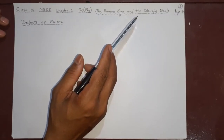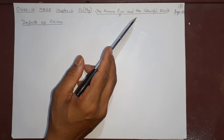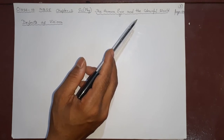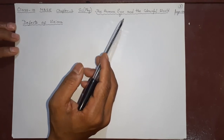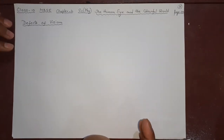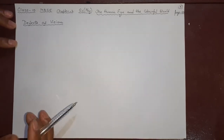We have already finished in our previous lecture what is the human eye, its diagram, and how the different parts of the eye enable us to see things. We also did power of accommodation, near point, far point, etc. Today we will be going to study defects of vision.